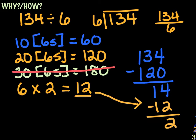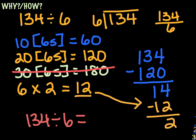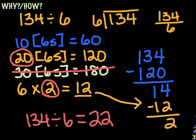I'm going to take that 12 and subtract from my 14, which leaves me with something that we call a remainder — it's the number that we have left over after a division problem that we can't take any more 6s from. So when we're looking at what's the answer to 134 divided by 6, it's going to be 20 plus 2, and a remainder of 2.